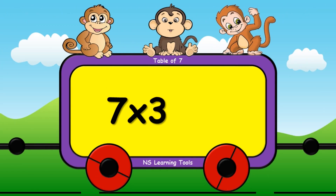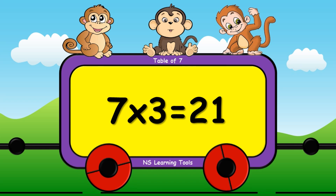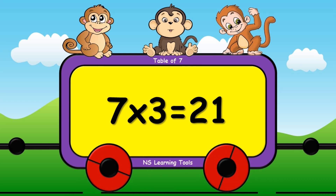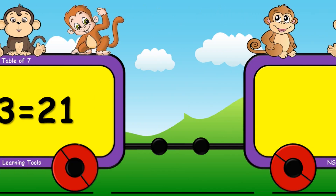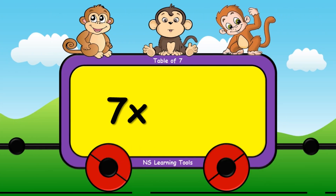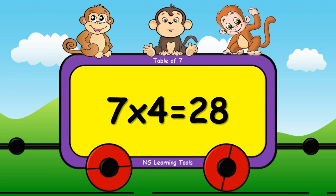Seven threes are twenty-one. Seven fours are twenty-eight.